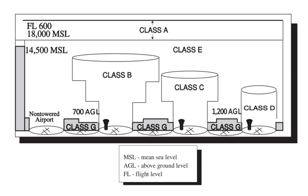Each national aviation authority determines how it uses the ICAO classifications in its airspace design. In some countries, the rules are modified slightly to fit the airspace rules and air traffic services that existed before the ICAO standardization.